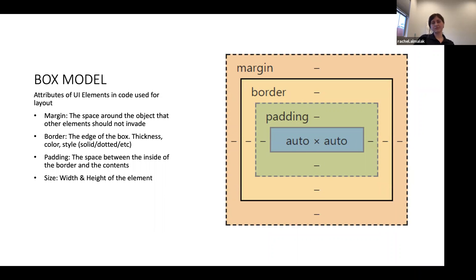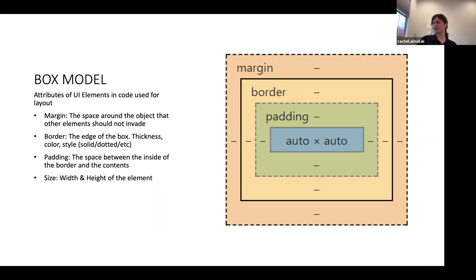Every object in any kind of UI is really based off of this box model. In non-web environments it could change a bit — they might have some different naming conventions or the math might be different — but it's all based off of boxes.